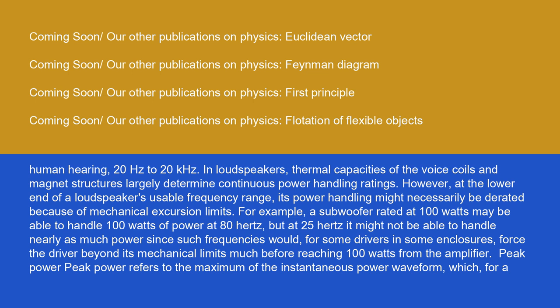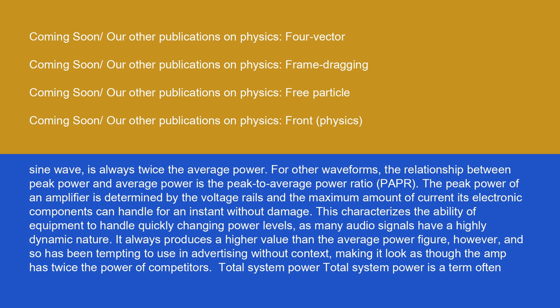Peak power refers to the maximum of the instantaneous power waveform, which for a sine wave is always twice the average power. For other waveforms, the relationship between peak power and average power is the peak to average power ratio (PAPR). The peak power of an amplifier is determined by the voltage rails and the maximum amount of current its electronic components can handle for an instant without damage. This characterizes the ability of equipment to handle quickly changing power levels.